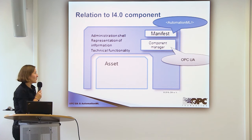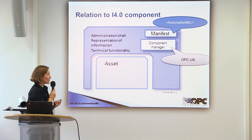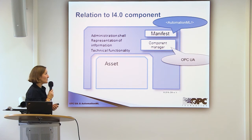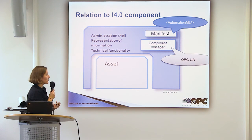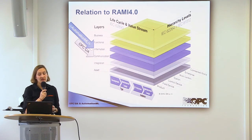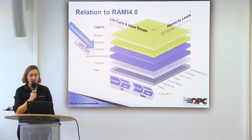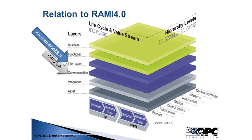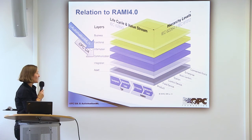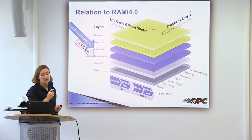On the other hand, if we look at the Reference Architecture Model Industry 4.0, the RAMI 4.0, we have different layers for the integration of components. OPC UA can be nested within the communication layer and AutomationML within the information layer. So both standards are really important also in that context.